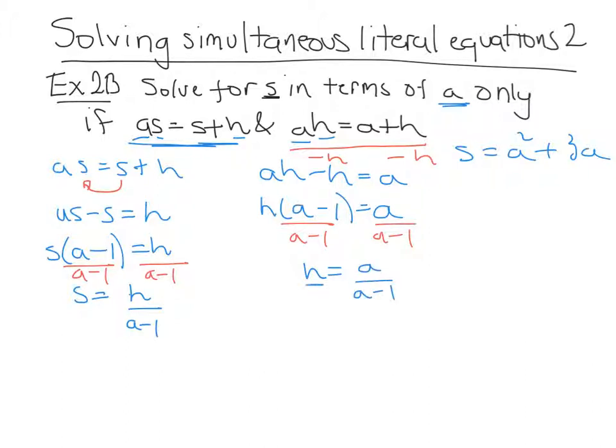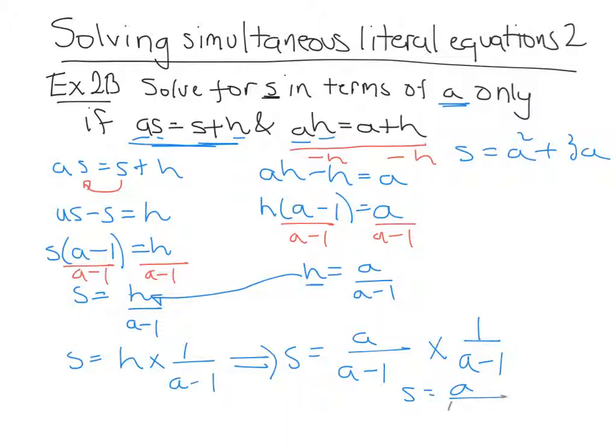Now, I can substitute this H into this H here. So if I said, well this is H times 1 over A minus 1, I can substitute in place of H there, A over A minus 1 times by 1 over A minus 1. So S is equal to A over A minus 1 squared.